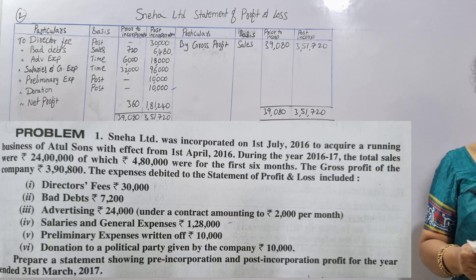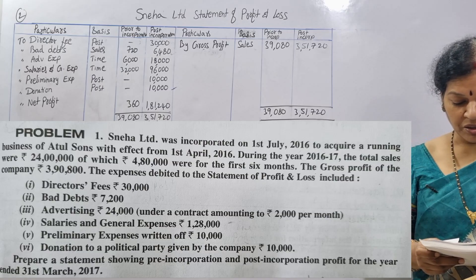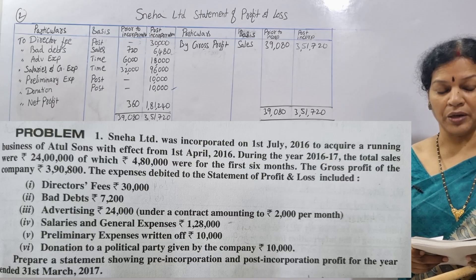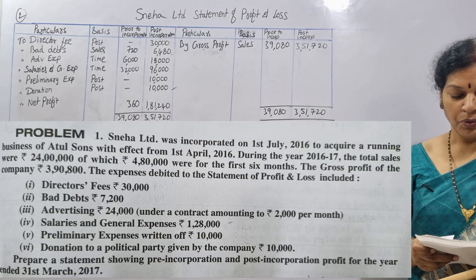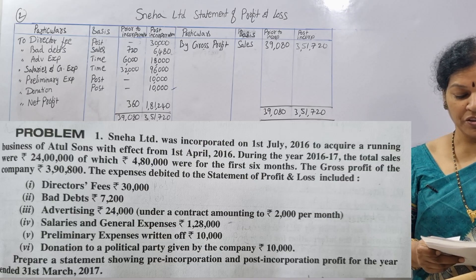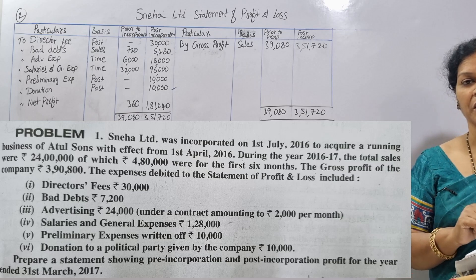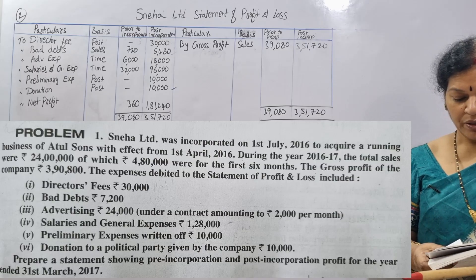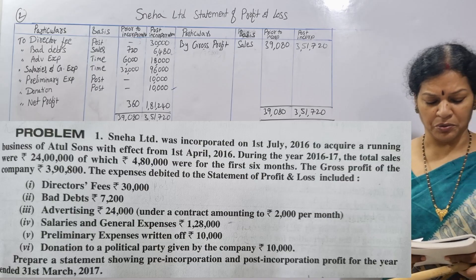The total sales were 24,00,000. Of which, 4,80,000 were for the first 6 months.